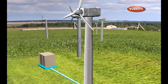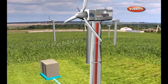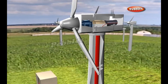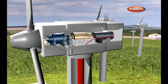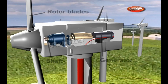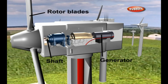At its essence, generating electricity from the wind is all about transferring energy from one medium to another. The simplest possible wind energy turbine consists of three crucial parts: rotor blades, shaft, and generator.